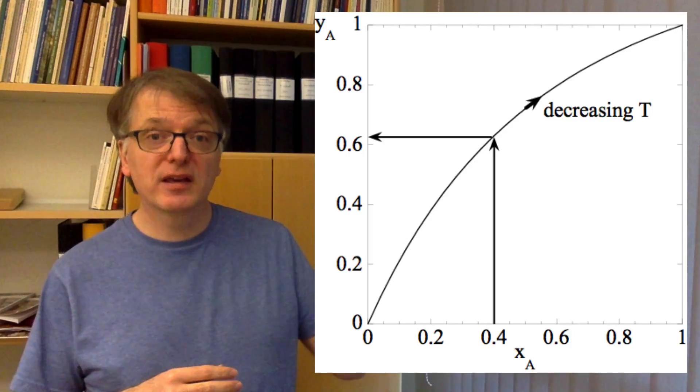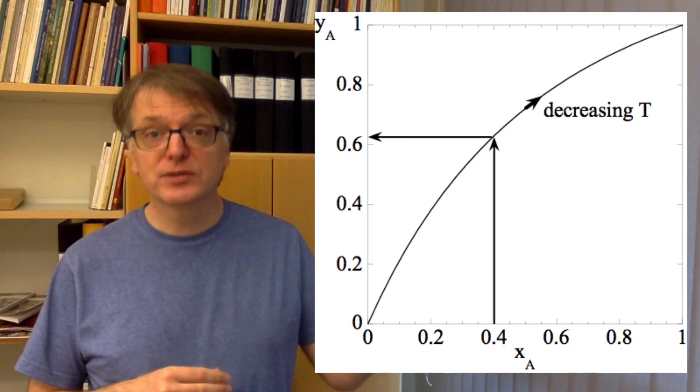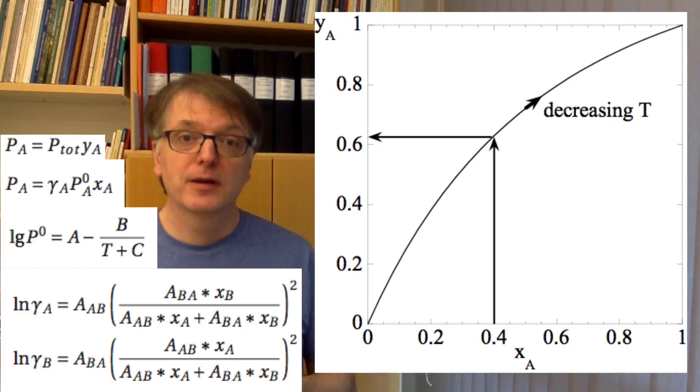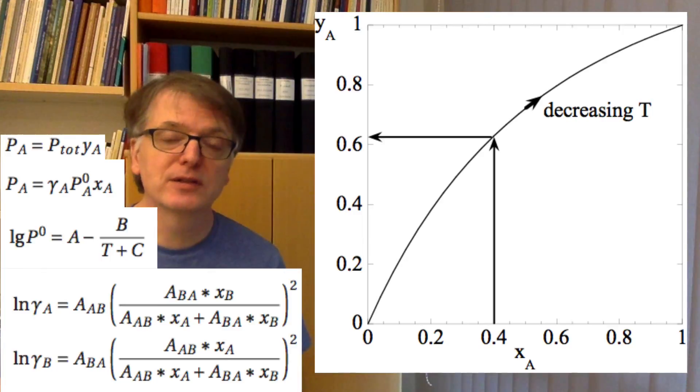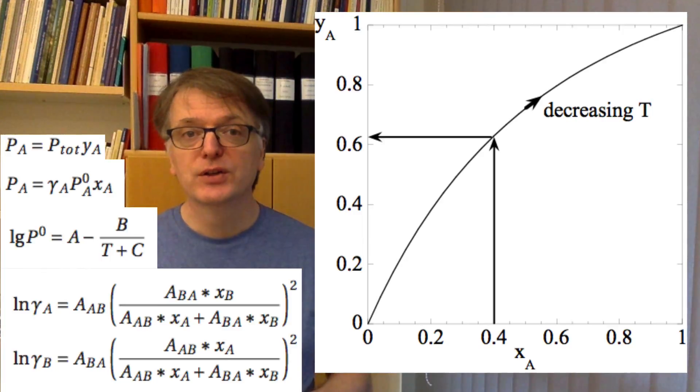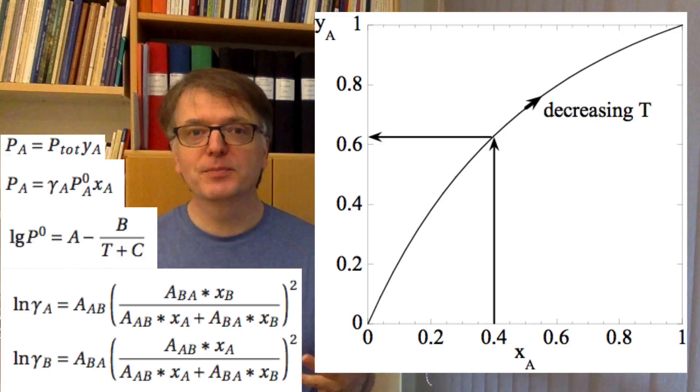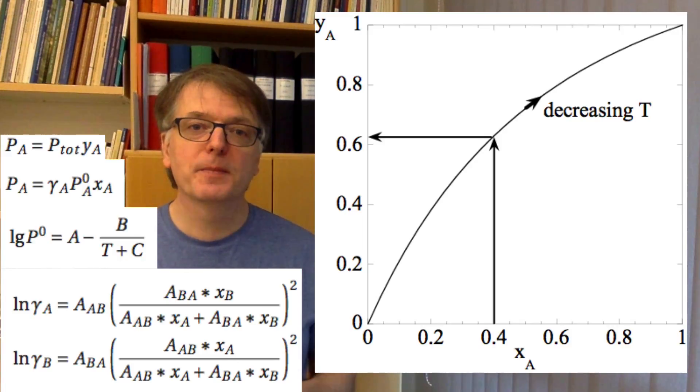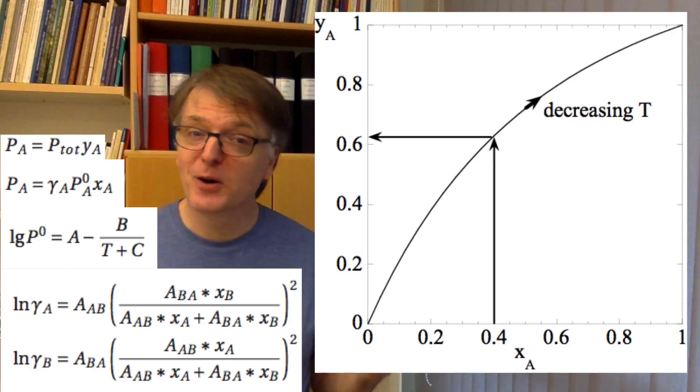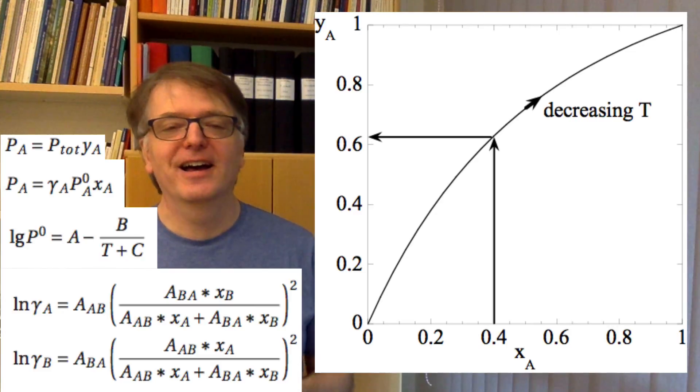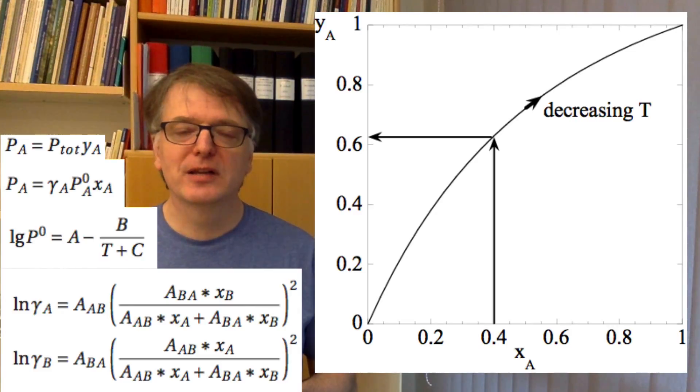If you want to make the diagram like this yourself you need to iterate. A problem here is that all real solutions are essentially non-ideal, so you need activity coefficients. And even if you take simple equations for activity coefficients, activity coefficients will vary with concentration and you will end up with an iteration.